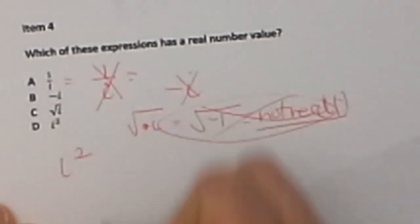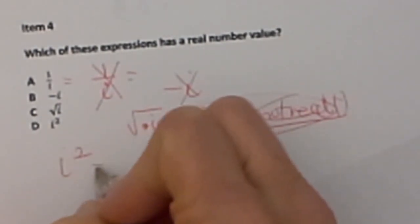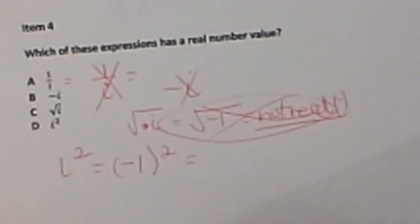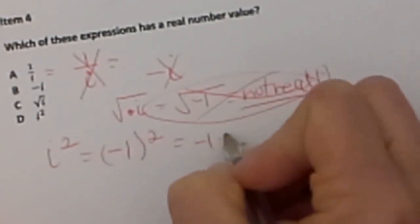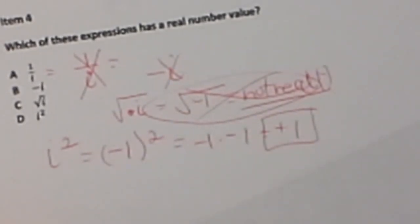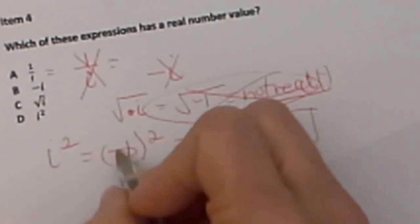So I squared. Well, the value of I is negative 1. If I take negative 1 and I square it, what do I get? I get negative 1 times negative 1, and that gives me positive 1. So there we go. I squared. I'm sorry, I wrote that wrong.